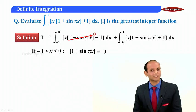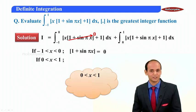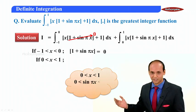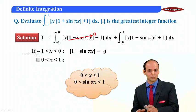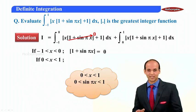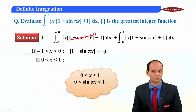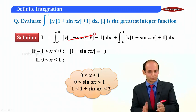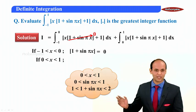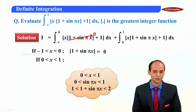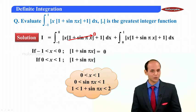For the second integral, limits are from 0 to 1. When x is between 0 and 1, π·x is from 0 to π, so sin(πx) ranges from 0 to 1. Adding 1 to both sides gives a range of 1 to 2, so the floor value ⌊1 + sin(πx)⌋ equals 1.